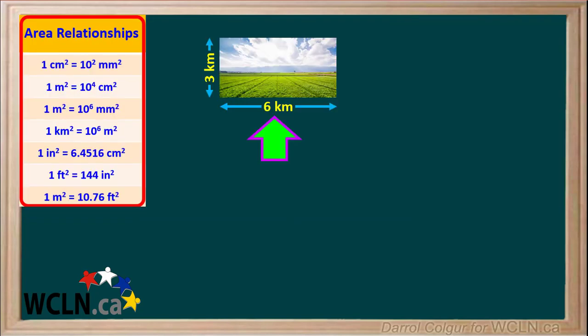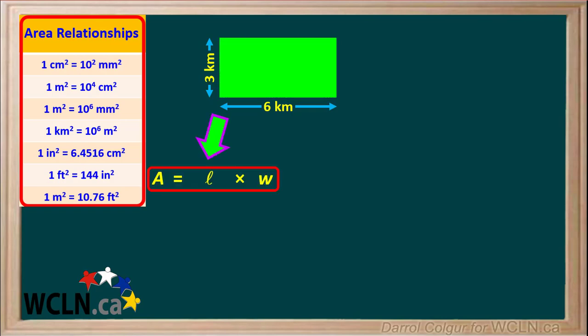For example, let's say we have a piece of land that is 6 kilometers by 3 kilometers. We can use the formula area equals length times width to calculate the area in square kilometers. The length is 6 kilometers and the width is 3 kilometers, so the area is 18 square kilometers.